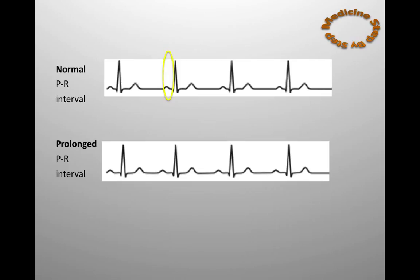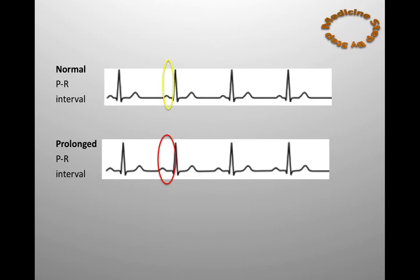On the top ECG, which is normal, you can see where I've circled the normal PR interval. On the bottom ECG, you can see that the PR interval is wider — this is first degree heart block. Throughout the ECG of first degree heart block, there is a prolonged PR interval.